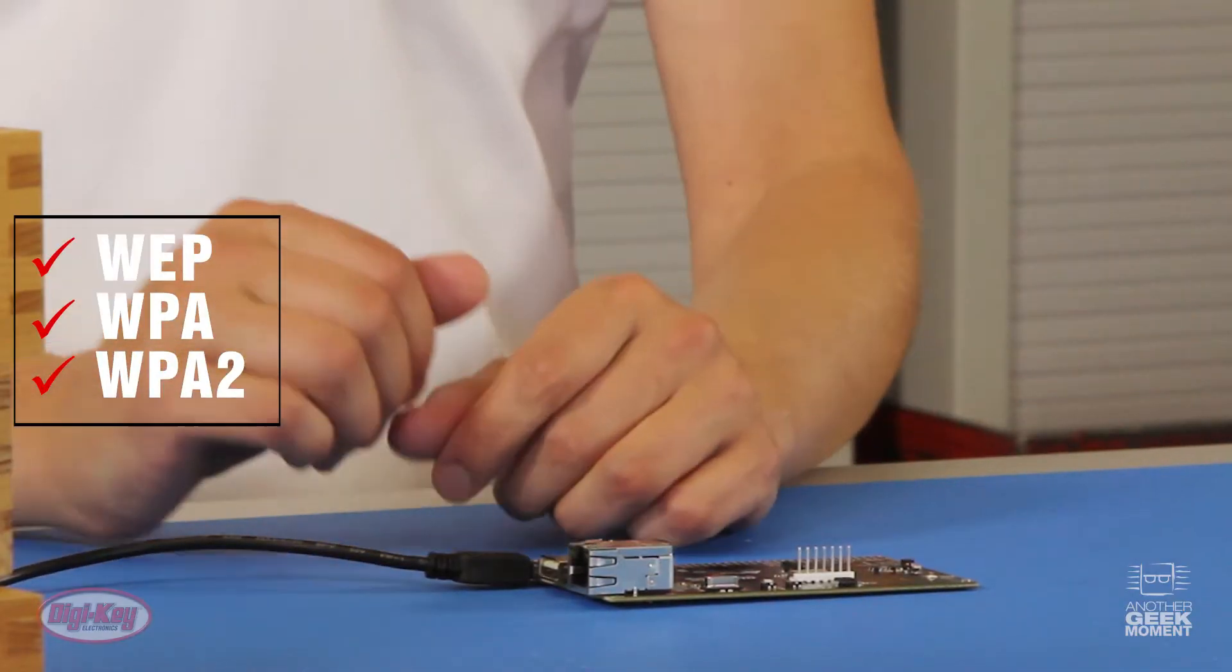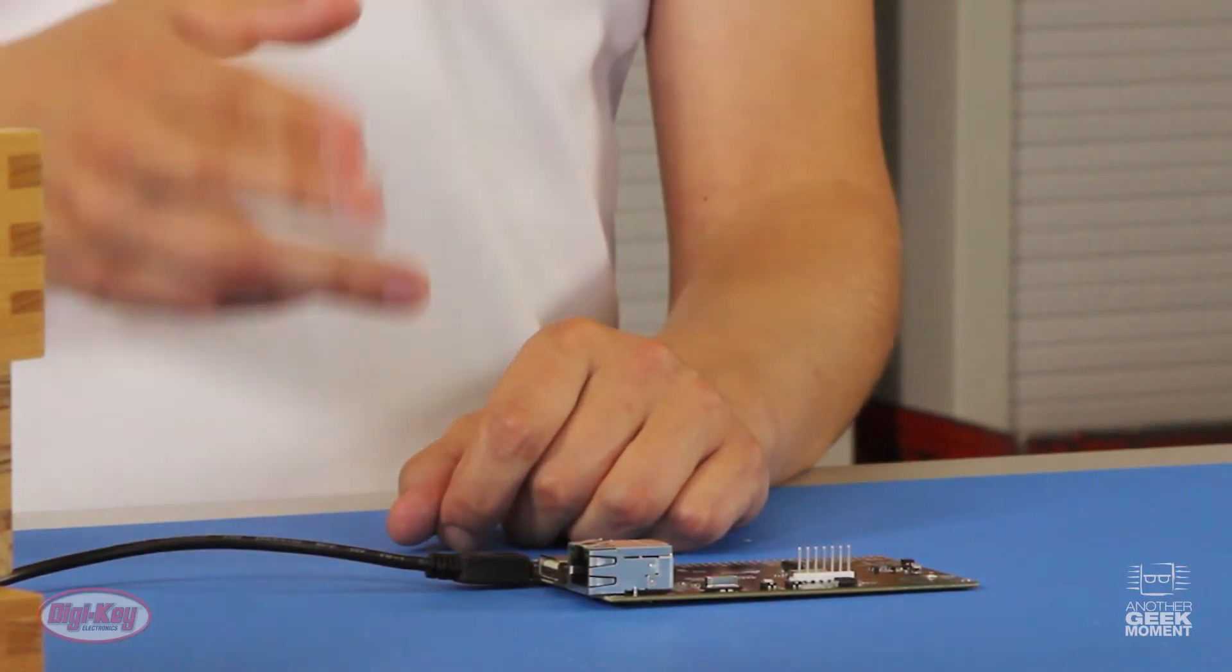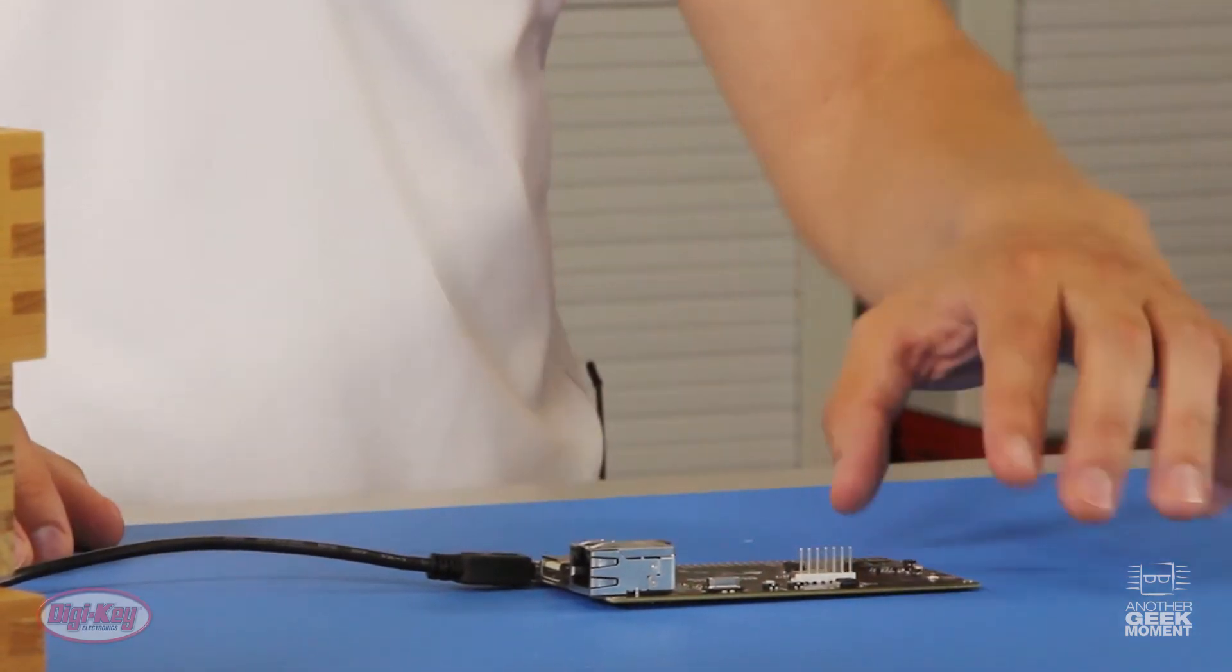Now this device knows whether you're using WEP, WPA, or WPA2 security. It automatically knows that. So all you're going to need is your SSID and your password on your device when you do the blink up.